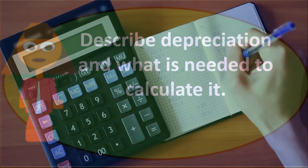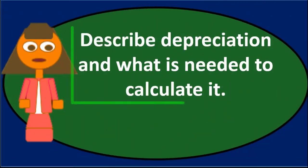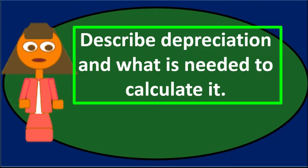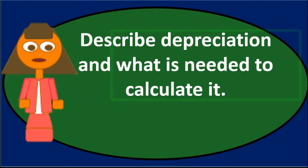We need to allocate that cost to the useful life in which it will be used. That will be the process of depreciation. When we think about depreciation, we might want to start off with a journal entry because that can really help us to jog our memory.